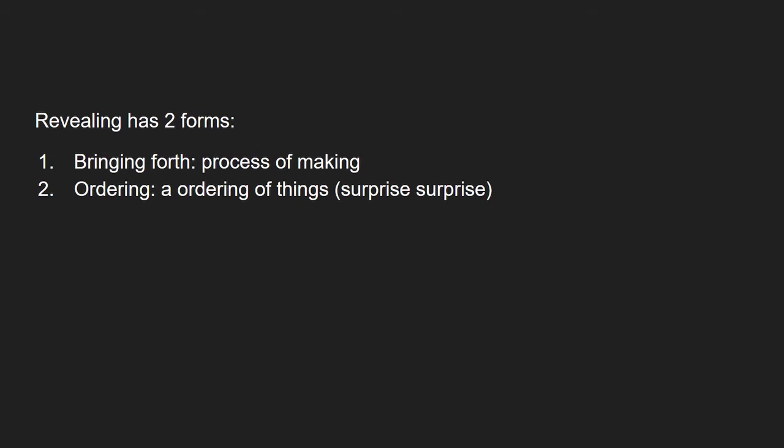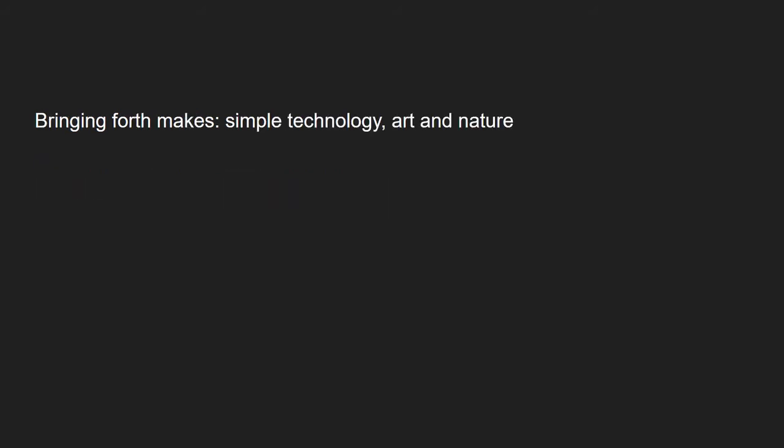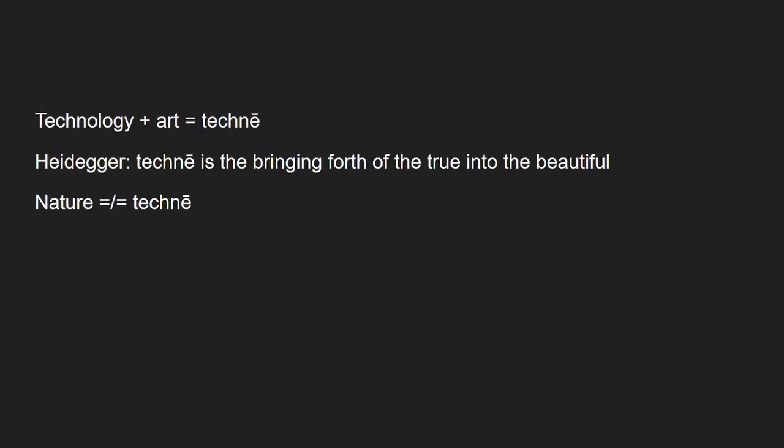Now let's look at the first form of revealing, bringing forth. Heidegger outlines what is created in bringing forth. These are simple technology, art and nature. The first two, if we look back to our Greek definition of technology, are techne, meaning they are arts and crafts of human construction. Obviously, nature is neither an art nor a craft, nor a human construction, so it's not techne. Heidegger suggests that bringing forth to humans is a relatively benign and unthreatening form of revealing.